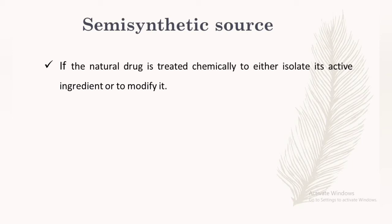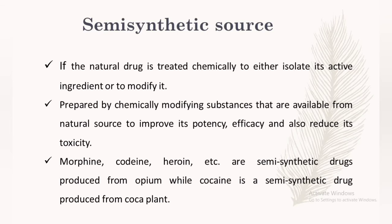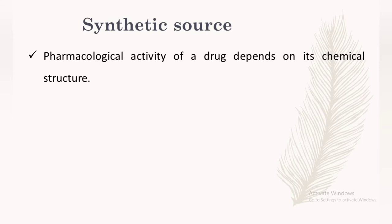Semi-synthetic source means a naturally occurring drug is treated chemically to either isolate its active ingredient, modify it, or remove toxic or harmful parts from the parent structure. It is prepared by chemically modifying naturally available substances to improve potency and efficacy and reduce toxicity. Examples include morphine, codeine, and heroin, which are semi-synthetic drugs produced from opium; cocaine is a semi-synthetic drug from the coca plant. Artemisinin, naturally obtained from Artemisia, can be modified by methylation and reduction to form artemether, used in the treatment of malaria.